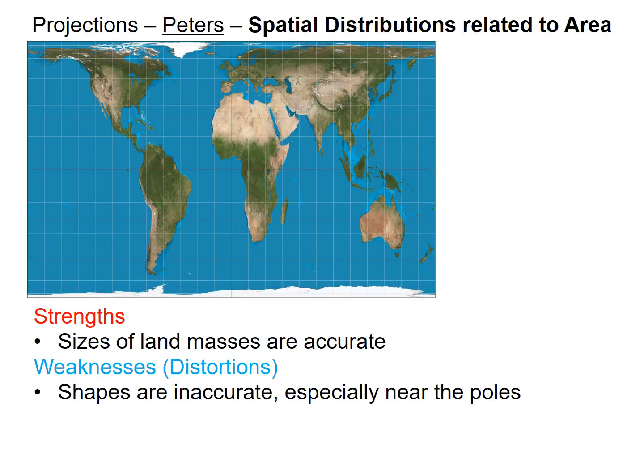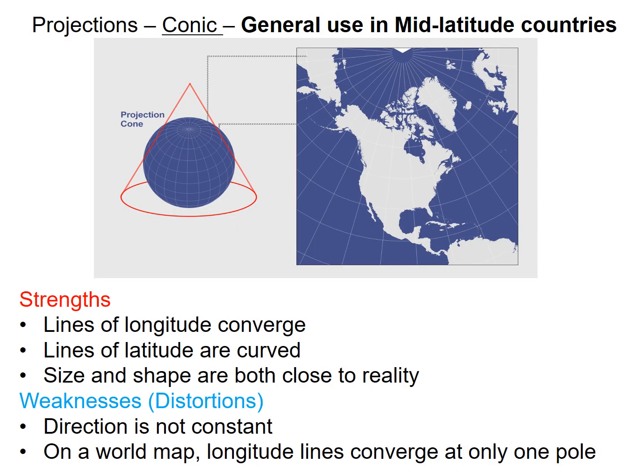Moving on to our Peters projection — this is a little bit easier; the Peters projection is really straightforward. Up next we have our conic projection. General use is the mid-latitude countries, meaning countries above and below the equator viewed from a kind of angled perspective as shown in the picture. It's really great because the longitude lines converge at the pole, and your latitude lines are curved to make it look realistic. The size and shape is very close to reality — this is a great projection. Really everything is accurate except direction, which can be a little inconsistent. Also, you're only seeing one part of the planet, so that itself is a distortion — you don't get to see the longitude lines converge on both poles because you're only looking at one of them.